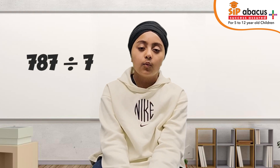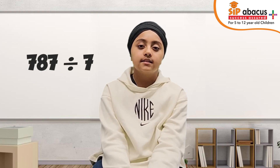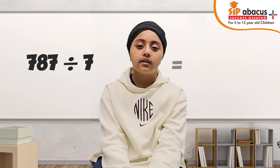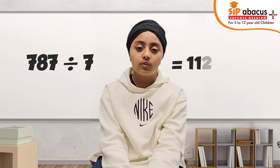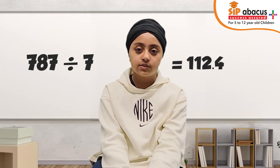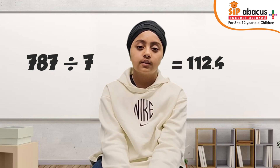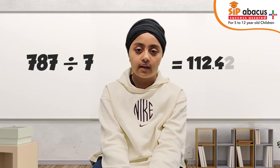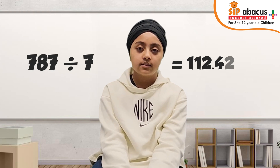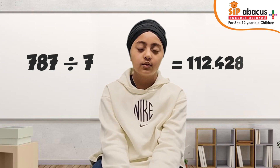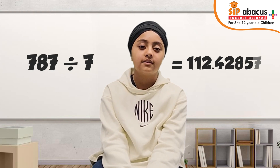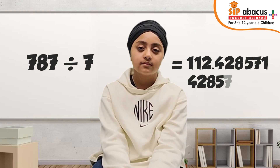What is 787 divided by 7? 112.428571. That's correct.